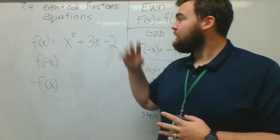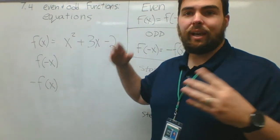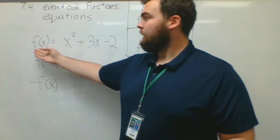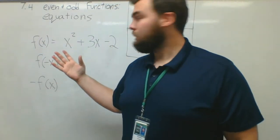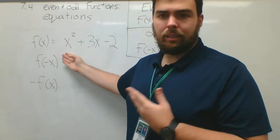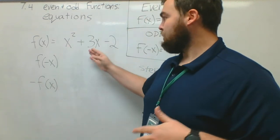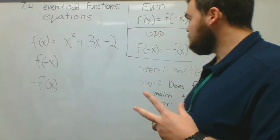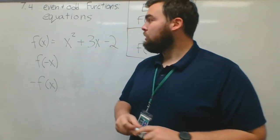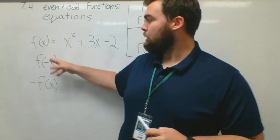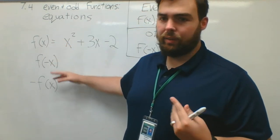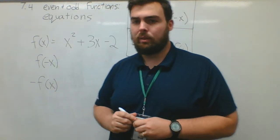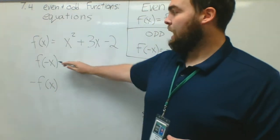This is going to be 7.4, even and odd functions, focusing on equations this time. So how this is going to work — we're going to get an f of x, a function. In this case, I just picked a random trinomial: x squared plus 3x minus 2. We're going to get much more complicated examples in a little bit. What I'm going to have to do is change this to f of negative x, and eventually possibly negative f of x. Let's start with f of negative x first.